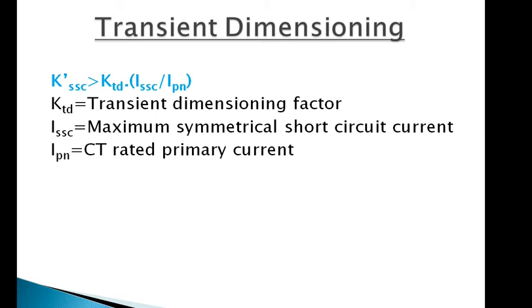Now we will check the IEC equation for the protection CT sizing calculation: K'_ssc > K_td × (I_ssc / I_pn), where K_td is the CT transient dimensioning factor, I_ssc is the maximum symmetrical short circuit current, and I_pn is the CT rated primary current. If the above criteria are fulfilled, then the protection CT sizing is OK.